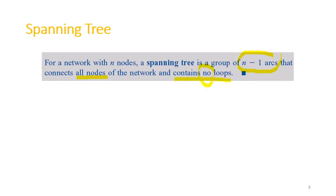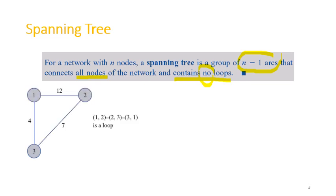Let's take a look at this example. Here we have 3 nodes, and if we have 3 connecting arcs like 1 to 2, 2 to 3, and 3 to 1, this is not a spanning tree. You can see that we have 3 arcs here, while in a spanning tree we should have n minus 1 arcs. So if the number of nodes is 3, we should have only 2 arcs. And you can see it is also a loop, so this is not a spanning tree.